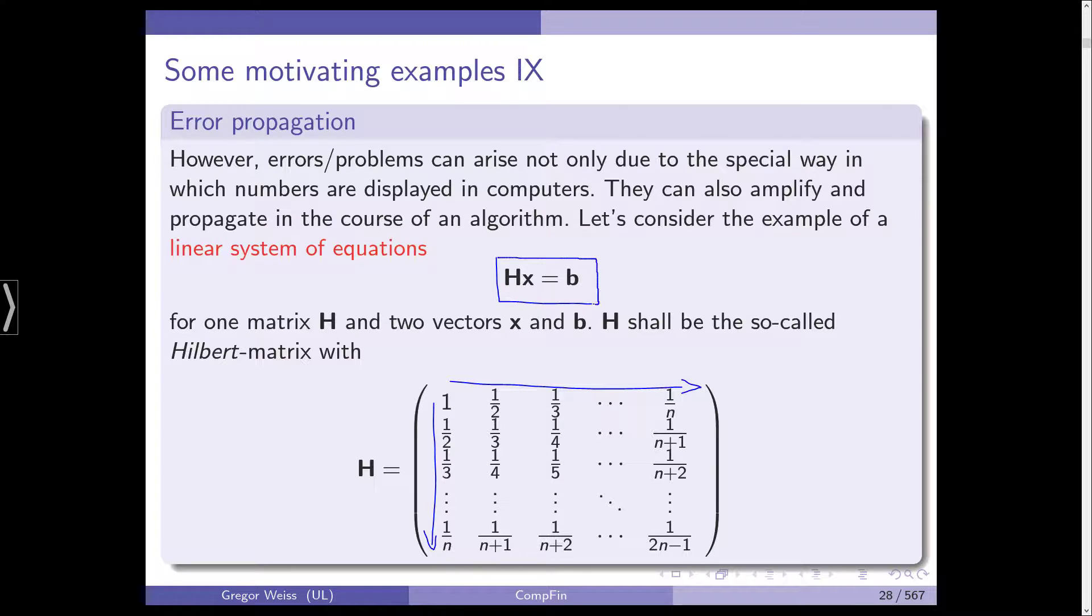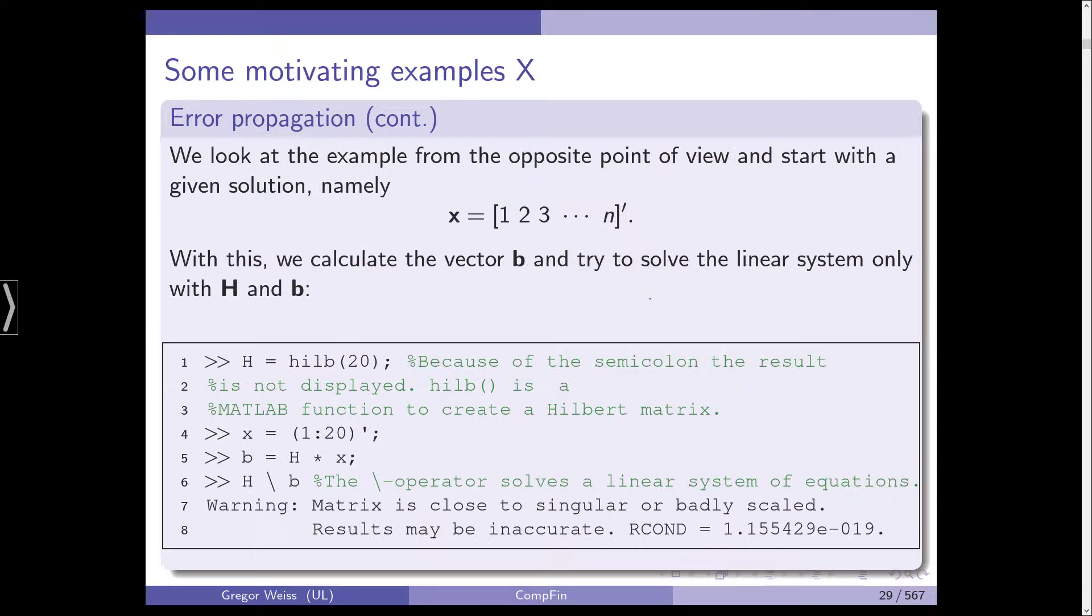Okay, we reverse engineer our example, and we start with the solution. So, we just assume that the solution is 1, 2, 3, 4, 5, 6, and so on, until n.